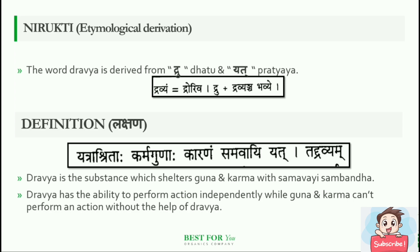Definition — that is, what are the lakshanas: Yathrakshitaha, karma gunaha, karanam, samavai, atadravyam. Dravya is the substance which shelters Guna and Karma with samavai sambandha. Dravya has the ability to perform action independently, while Guna and Karma cannot perform an action without the help of Dravya.